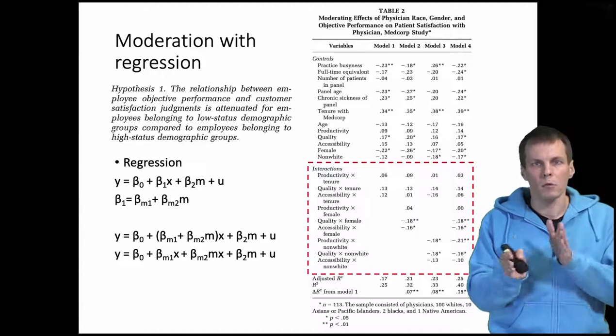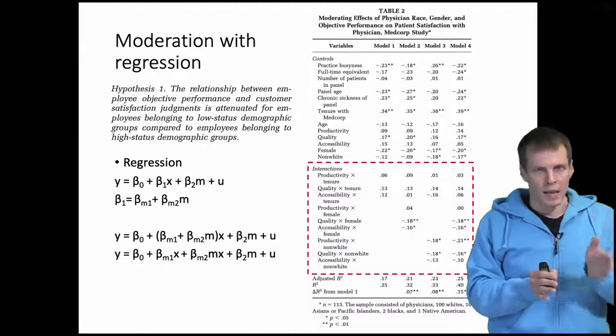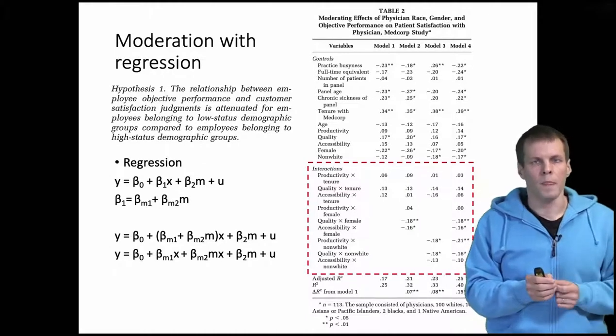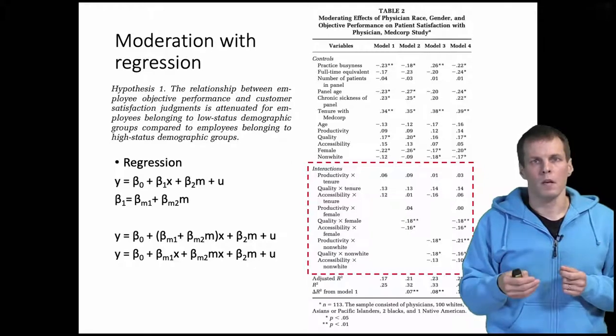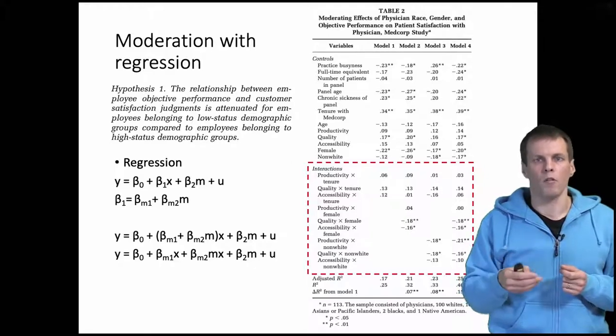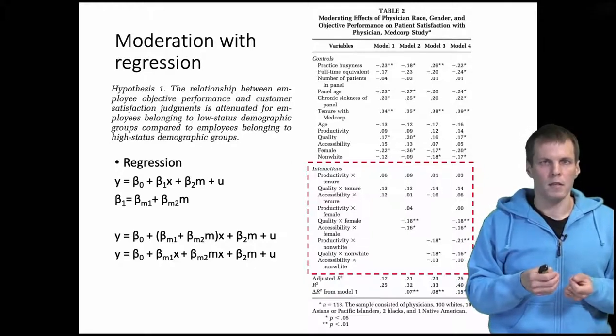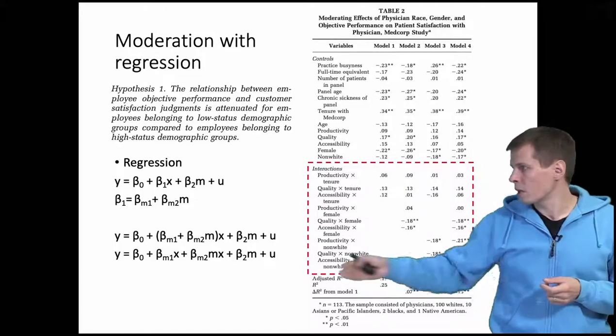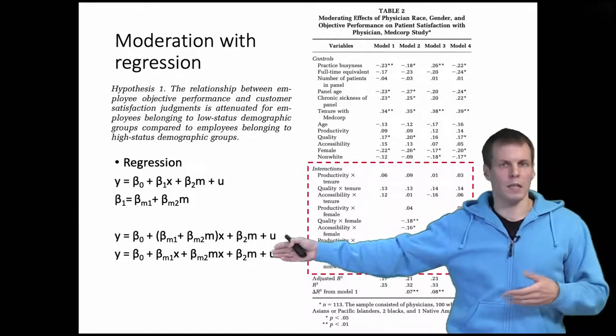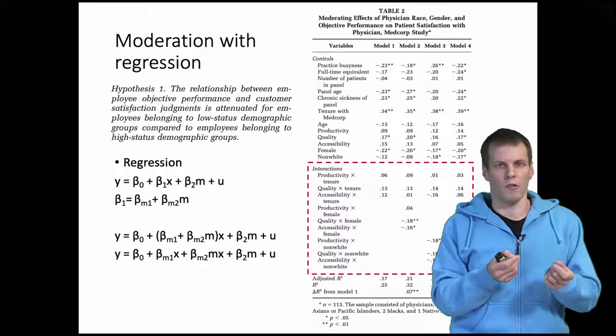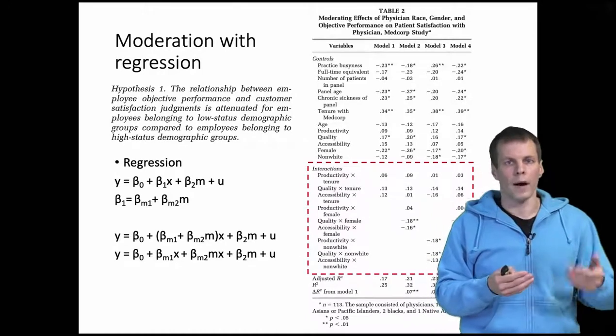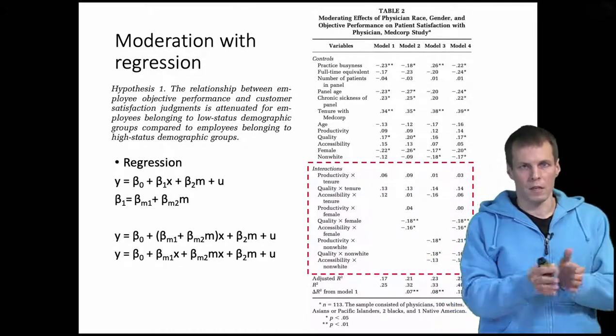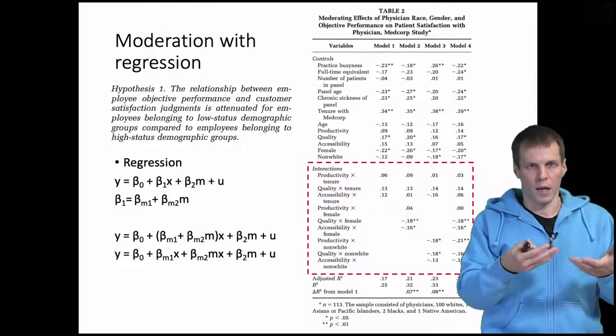So interaction refers to multiplying two things together. We have x, the main interesting variable, here quality, and m, the moderator, here gender or minority race as the moderator. We multiply them together and then we can see if the race or gender has an effect on how much a person is rewarded for being a high quality doctor.